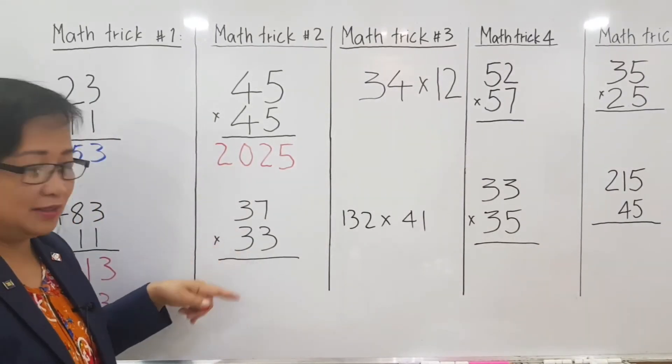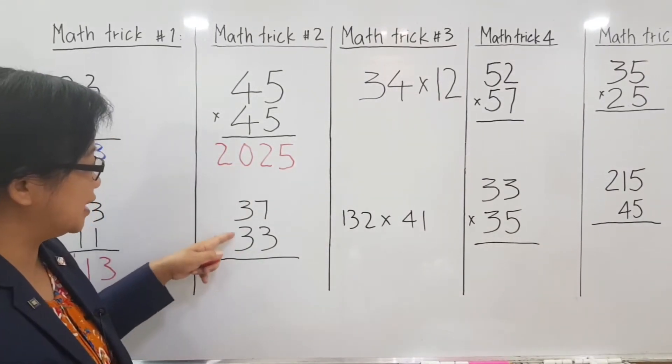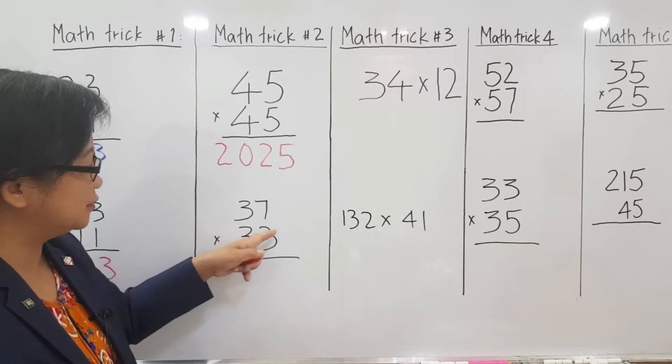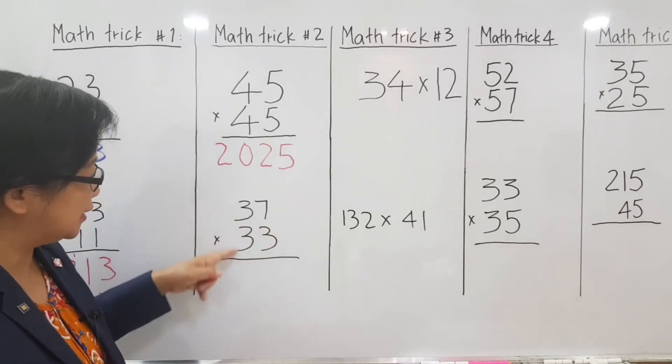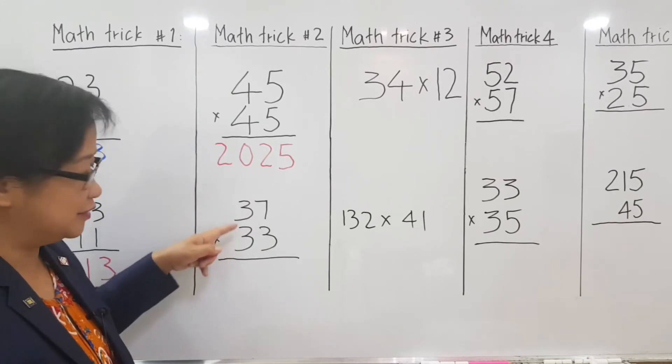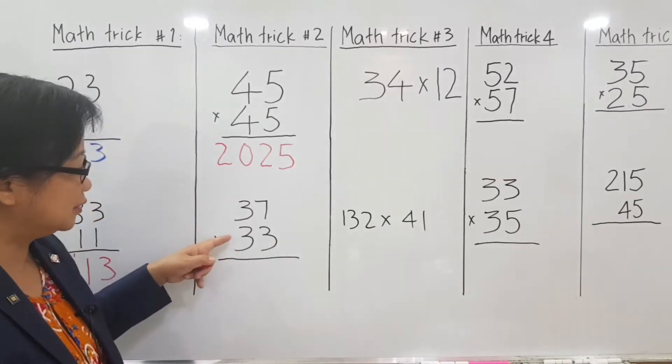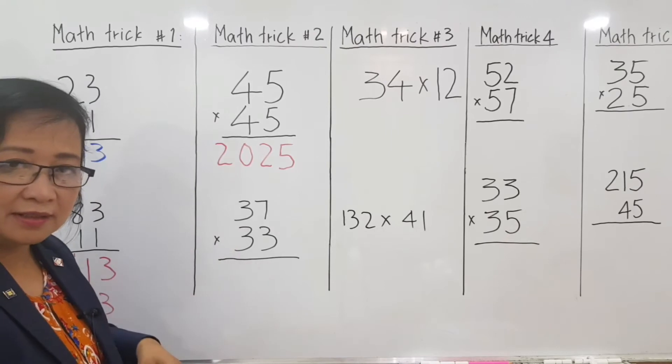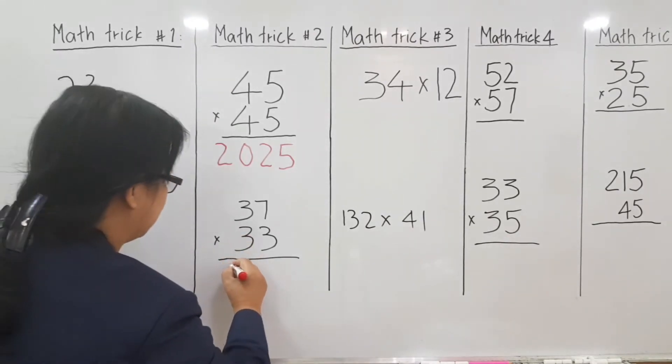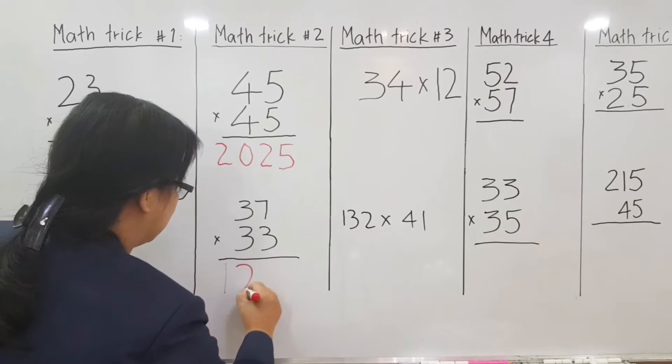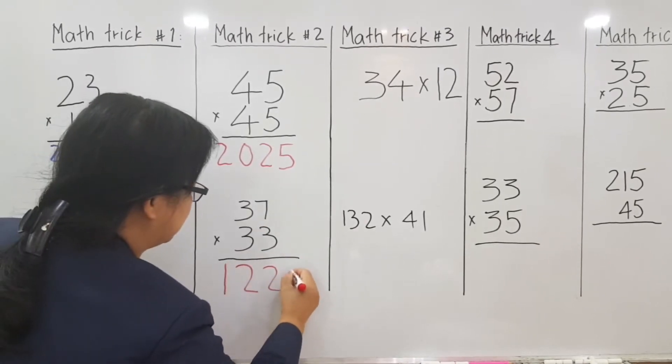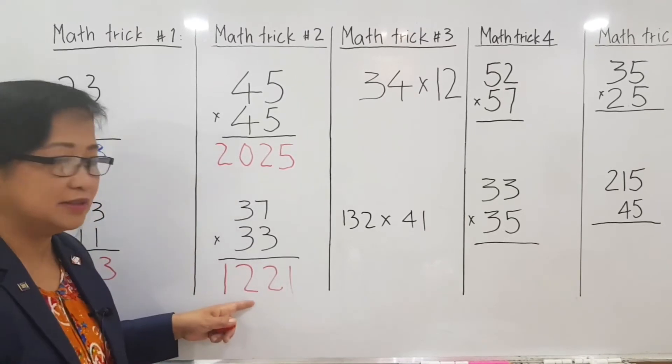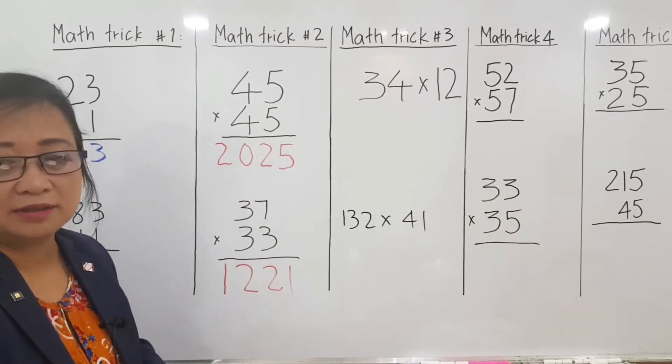How about the second one? Of course, same. Because as I've told you, the ones is equal to 10, and the tenth column have the same number. So just multiply 3 by the second number, which is 4. So 3 times 4 is equal to 12. And the last one is 21. The answer is 1,221.